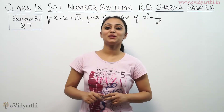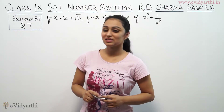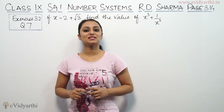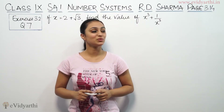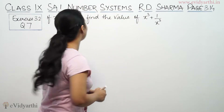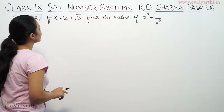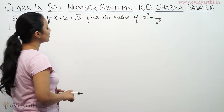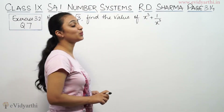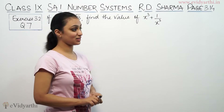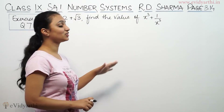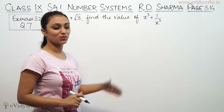Hi, this is Khushbu with another question of Number Systems. This is question number 7 from exercise 3.2, page number 3.14 from R.D. Sharma. This says: if x is equal to 2 plus root 3, find the value of x cube plus 1 by x cube.